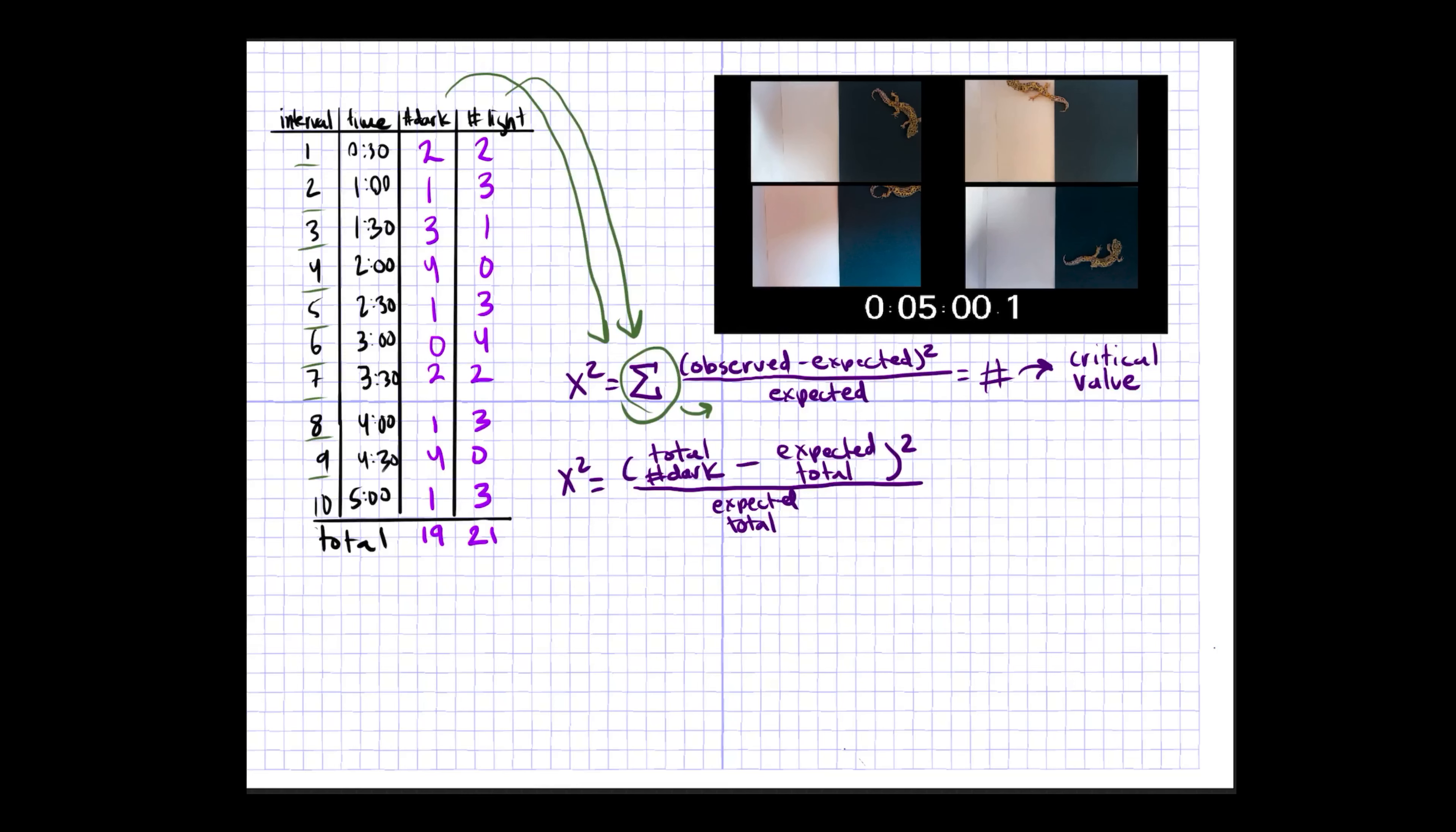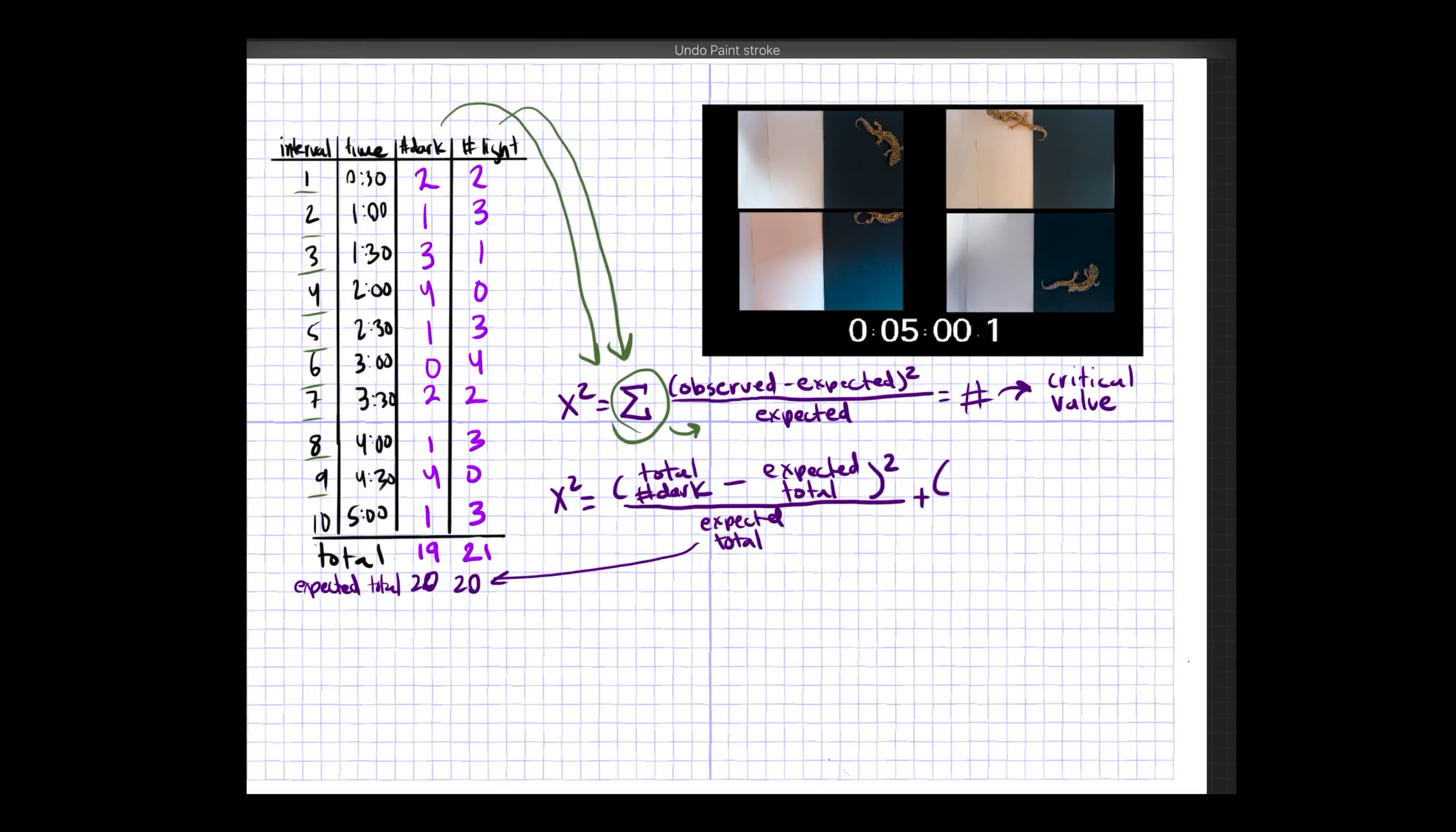So in this case, the expected total would be 20 and 20. That would be expected if there was no preference between the two sides. Since this is a summation, now we're going to add the same equation but done for the light group: the total light minus expected total squared over expected total. Now, let's plug in these numbers for this example set and then find our critical value.